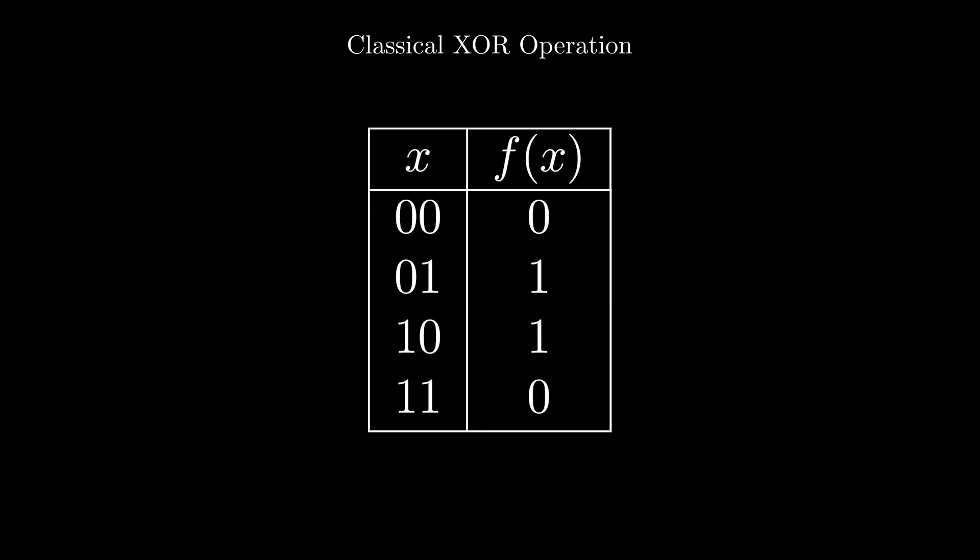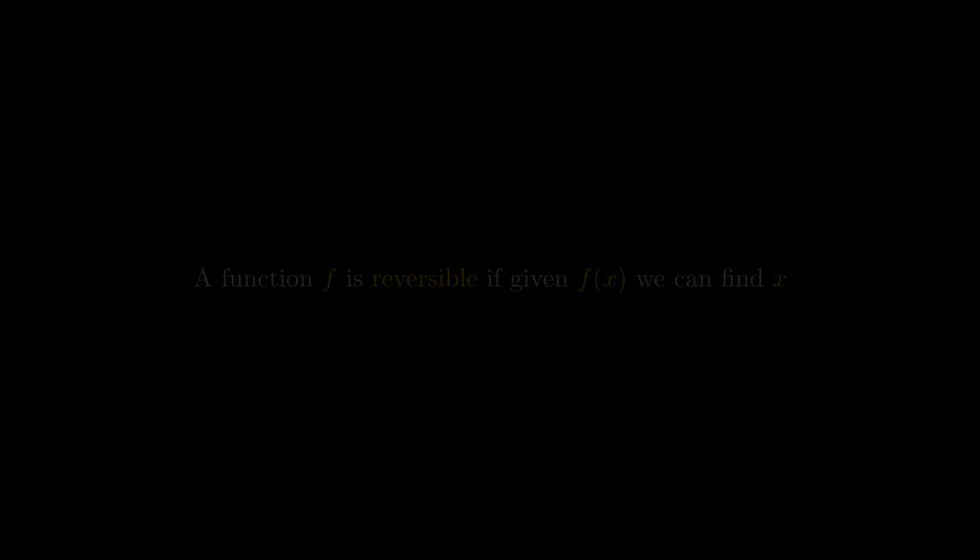We use the exclusive OR operation to make reversible classical gates. We say a function f is reversible if given f of x, we can determine the value of x. So if we are given the output, we can determine the input.